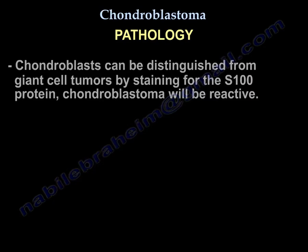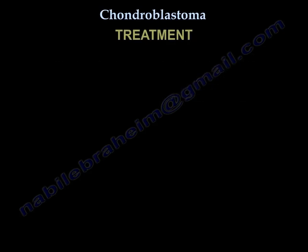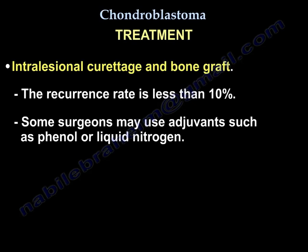Chondroblastoma can be distinguished from giant cell tumor by staining for the S-100 protein; chondroblastoma will be reactive. Treatment is intralesional curettage and bone graft. The recurrence rate is less than 10%. Some surgeons may use adjuvants such as phenol or liquid nitrogen.